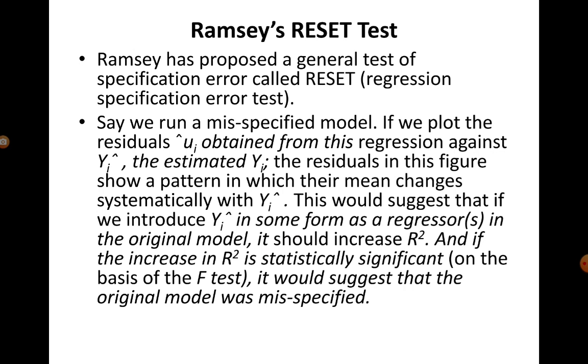The process is like this. Say we run a misspecified model. Obtain the ui hats from this model and plot it against your estimated yi, that is yi hat. If the residuals in this figure show a distinct pattern, it will suggest that including yi hat or some form of it, that is yi hat square or maybe its cube, should be included as an additional explanatory variable in the original model.